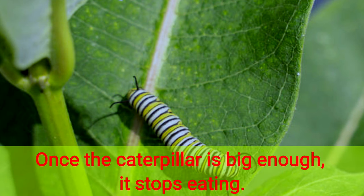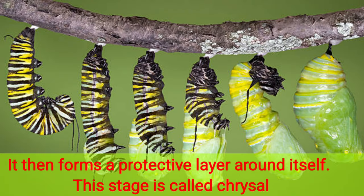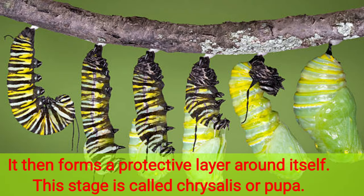It then forms a protective layer around itself. This stage is called chrysalis or pupa.